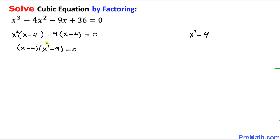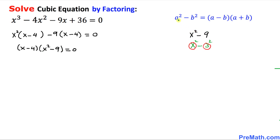Now let's focus on the x squared minus 9 part. I've copied it down on the right hand side. We can manipulate it a little bit — x squared and 9 can be written as 3 squared, and this gives us a difference of two squares. So we are going to use the formula a squared minus b squared equals a minus b times a plus b. So x squared minus 3 squared can be written as x minus 3 times x plus 3.